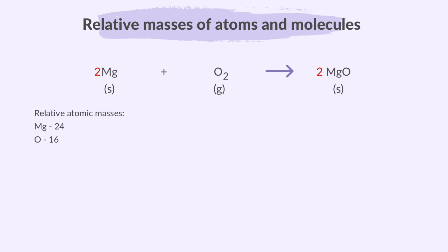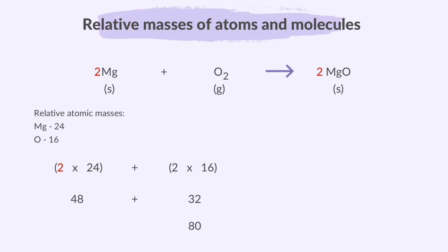Let's calculate the reacting masses. For magnesium, it's 2 times 24, which is 48. And for oxygen, since there are two atoms in O₂, it's 2 times 16, which is 32. This gives a total reacting mass of 80 grams.